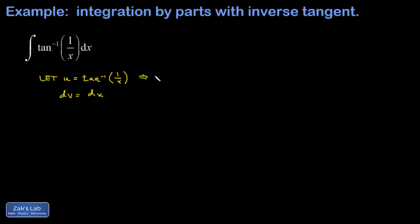Then I need to get the differential of u, so I have to get the derivative of this inverse tangent piece times dx. Well, the derivative of inverse tangent is 1 over 1 plus its argument squared, multiplied by the derivative of that argument because of the chain rule.